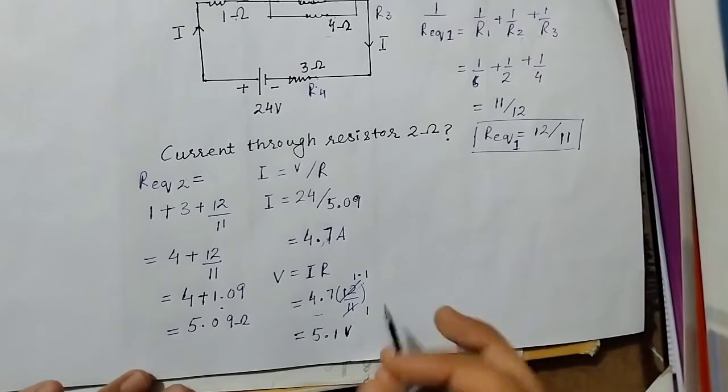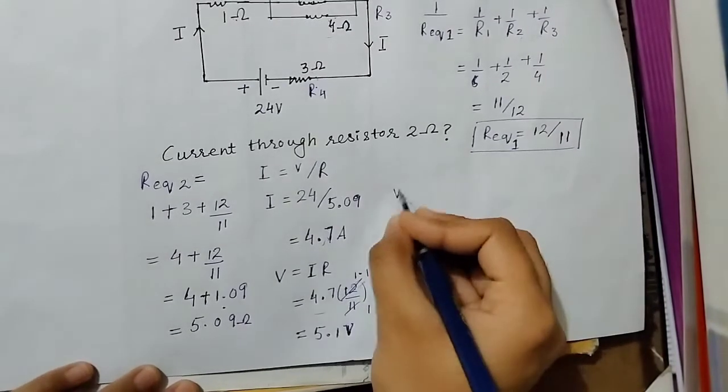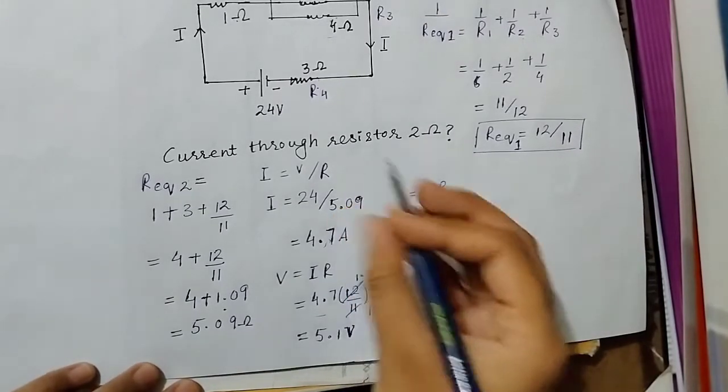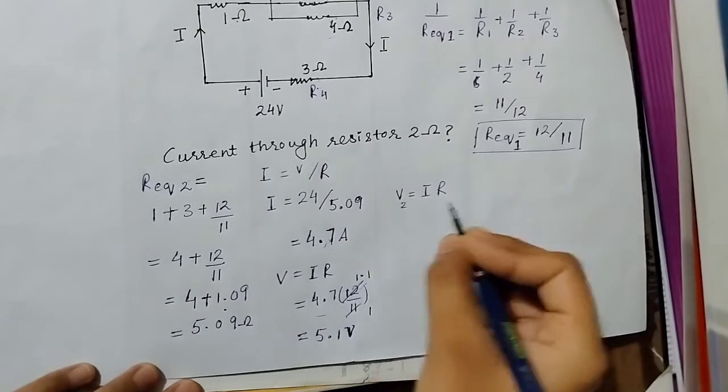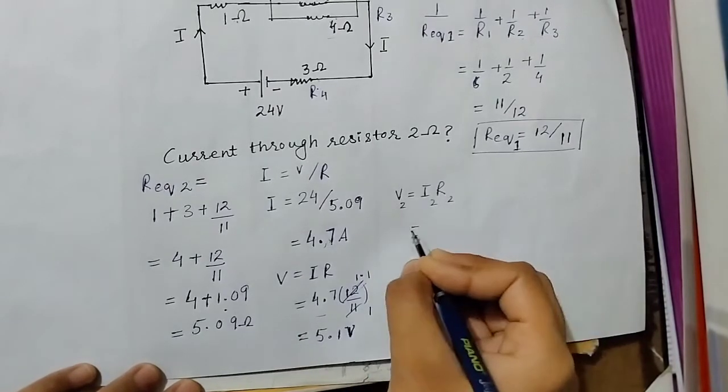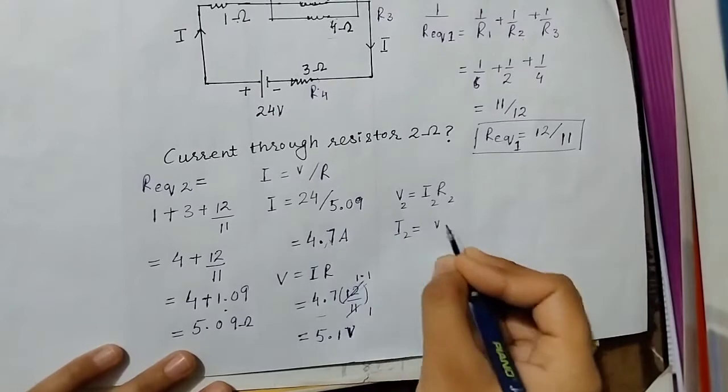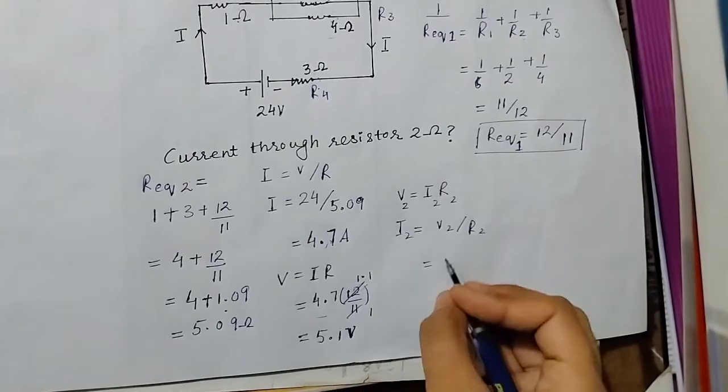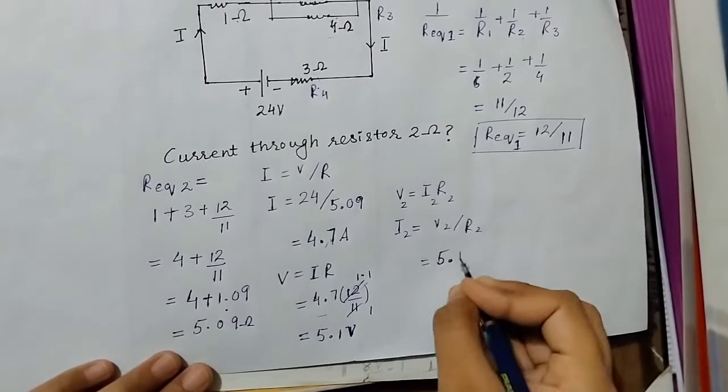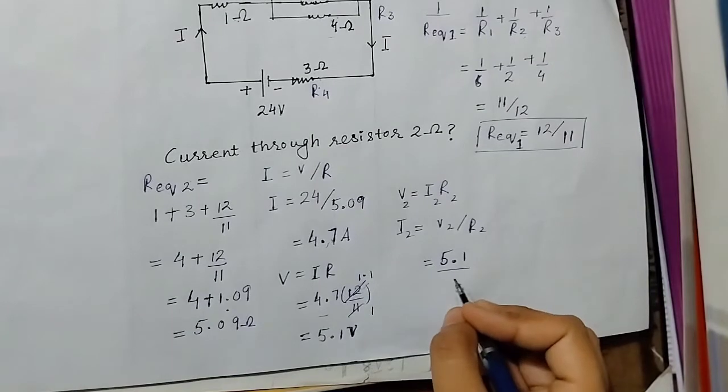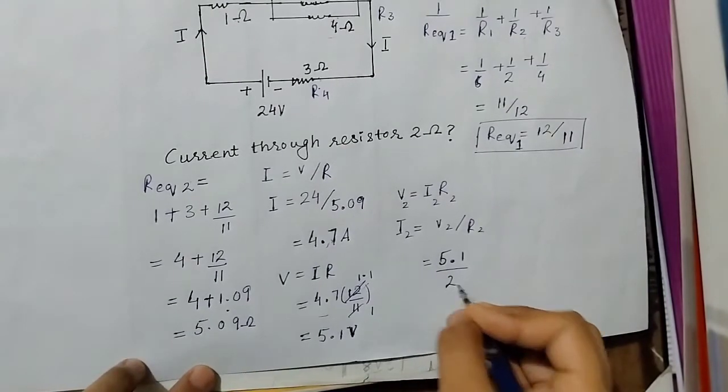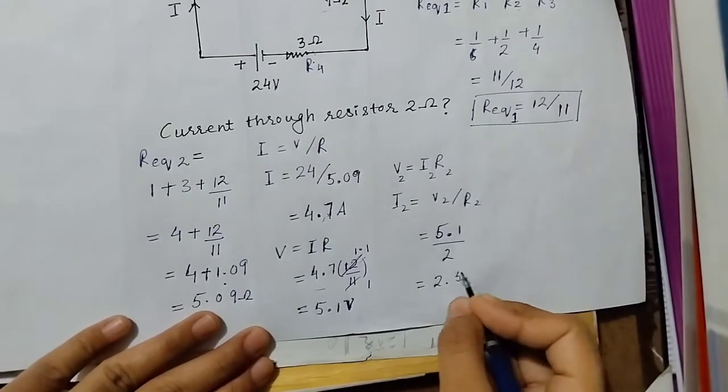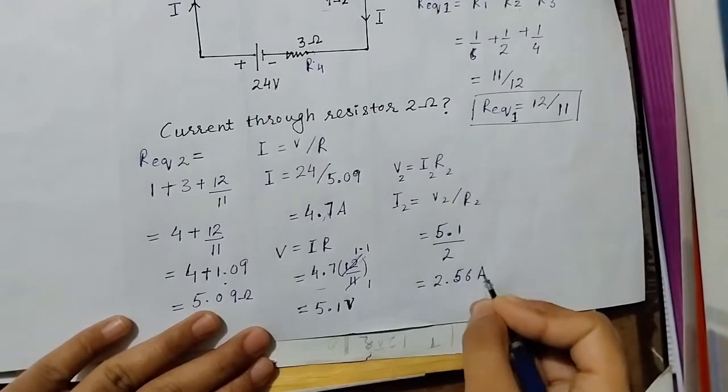Now we find the current. I2 equals V2 over R2. The voltage is 5.1 and its resistance is 2 ohm, so when we solve it will be something like 2.56 ampere.